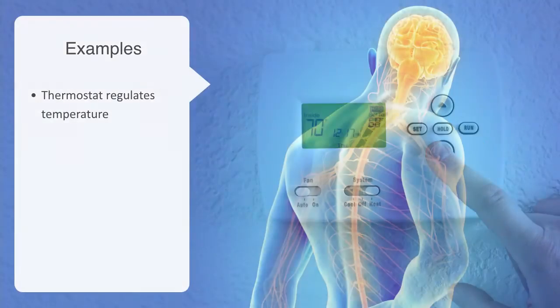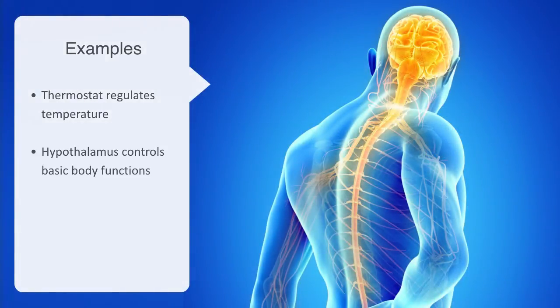Another example from the human body is the hypothalamus that regulates the autonomic nervous system. It controls basic body functions such as internal temperature, hunger, sleep, and so on.